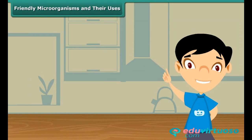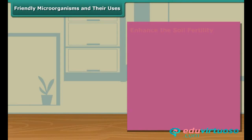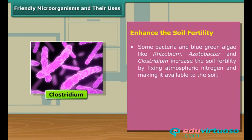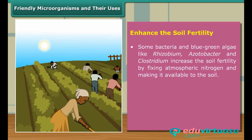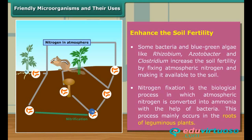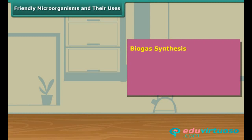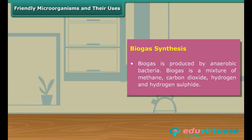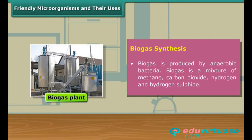Now let me tell you what other benefits are provided by useful microorganisms. Some bacteria and blue-green algae increase the soil fertility by the atmospheric nitrogen fixation process. Nitrogen fixation is the biological process in which atmospheric nitrogen is converted into ammonia. There are other friendly anaerobic bacteria that are used in the synthesis of biogas. Biogas is a mixture of methane, carbon dioxide, hydrogen and hydrogen sulfide.